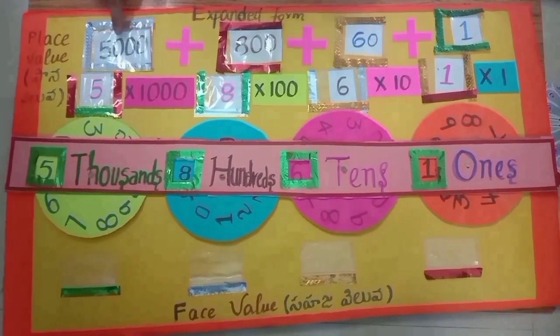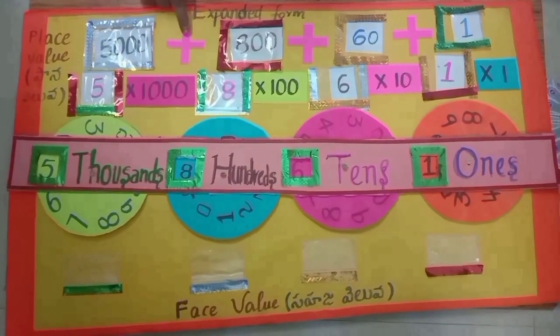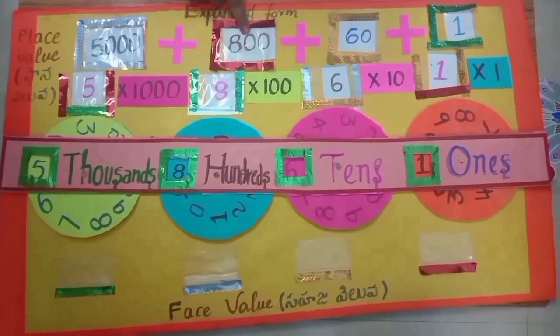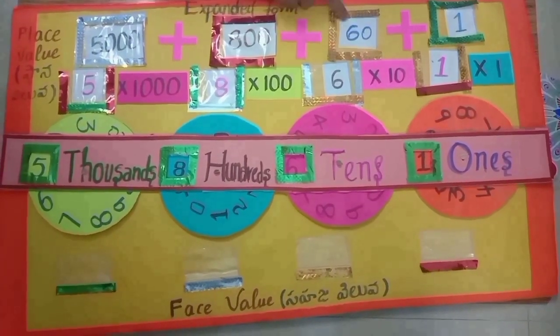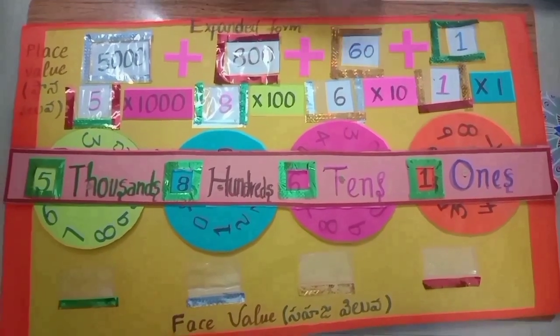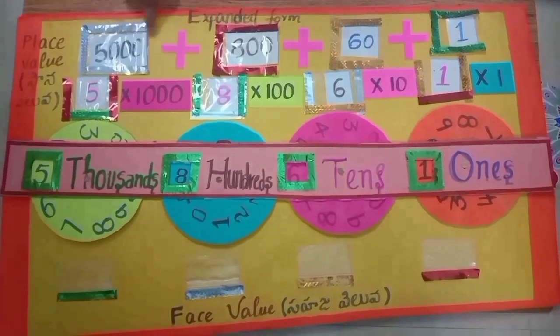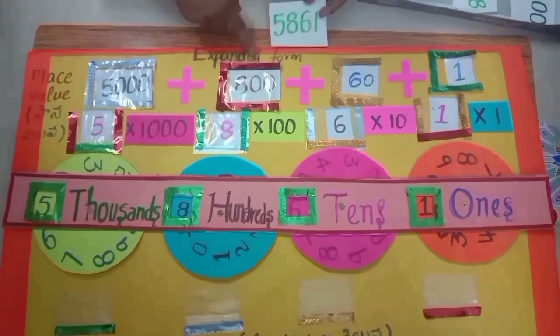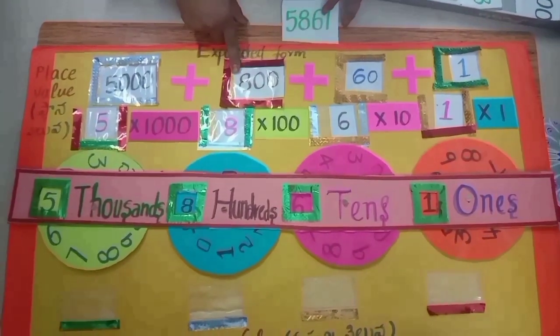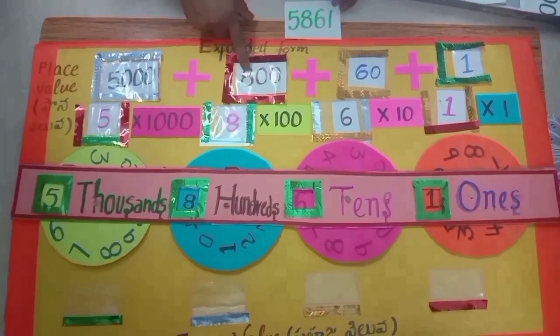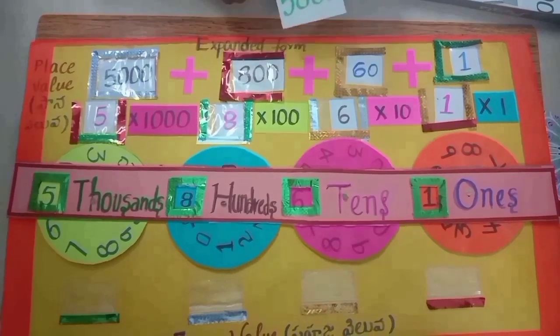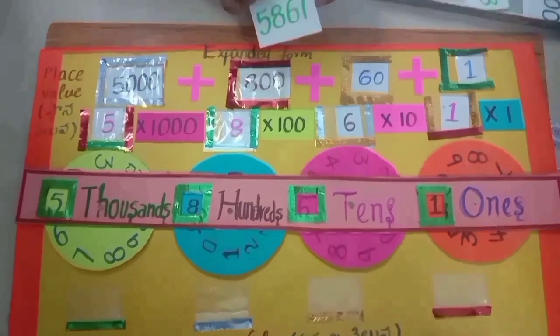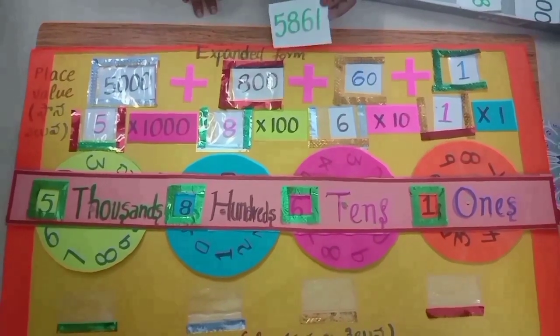Here, 5000 plus 800 plus 60 plus 1 equals 5861. This is the expanded form. Its short form is 5861.